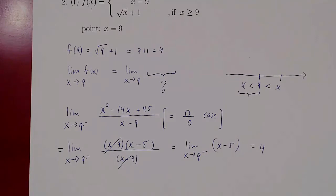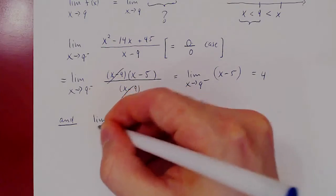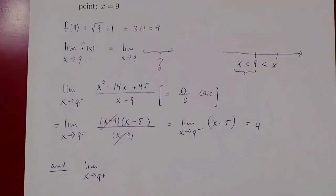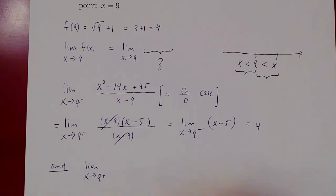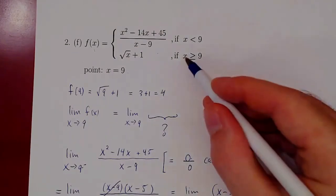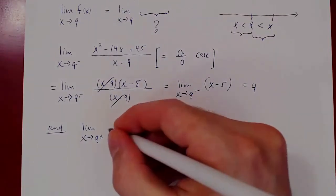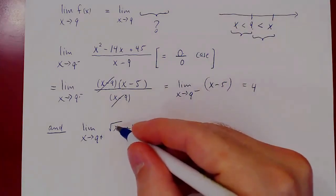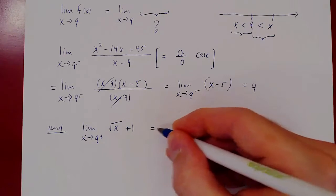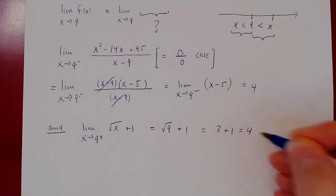Now the question is: what happens to the limit from the right? We are letting x approach 9 from the right, so x is bigger than 9. In that case, the function is √x + 1. As x approaches 9, √x will approach √9, plus 1. The root of 9 is 3, and we get, once again, 4. So the limit from the right is also equal to 4.